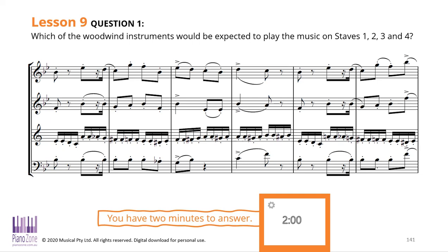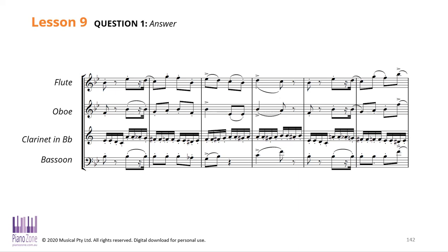The reason we're doing this is because this is the sort of question you'd be asked: which of the woodwind instruments would be expected to play the music on each of these staves? You can see straight away that three have the same key signature and one doesn't. This is where it gets a little confusing. The way you can tell is by knowing that the flute, the oboe, and the bassoon are not transposing instruments.